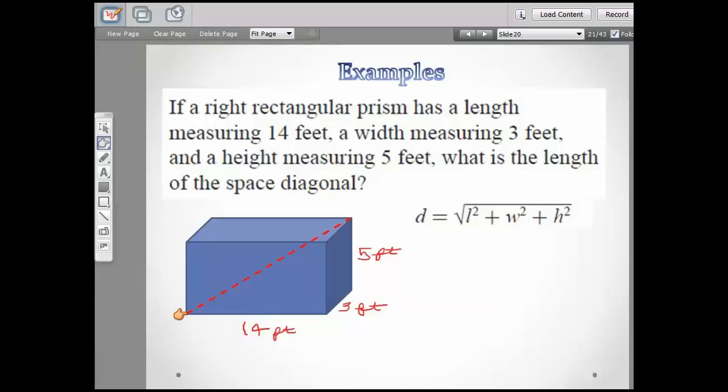So that's what makes it the diagonal. And I was trying out some of my writing techniques. I just cannot write with this bamboo pad. So here's what I wrote: 14 feet for the length, 3 feet for the width, and 5 feet for the height. Now remember, here's your formula.